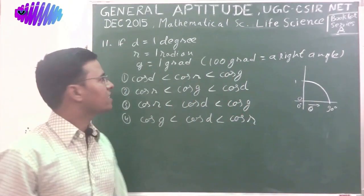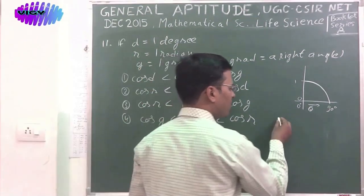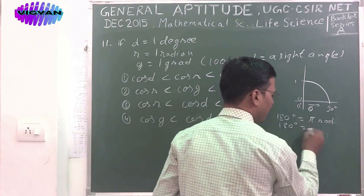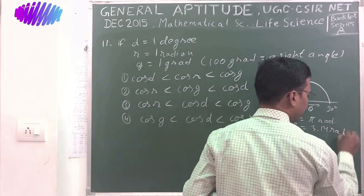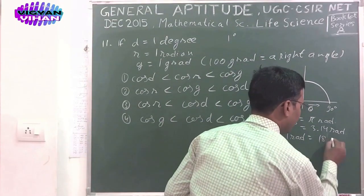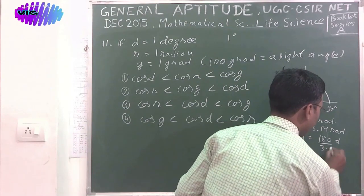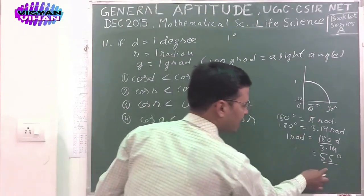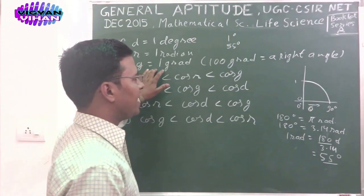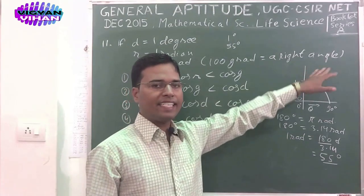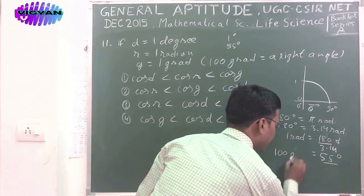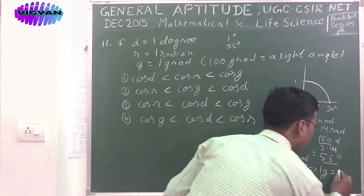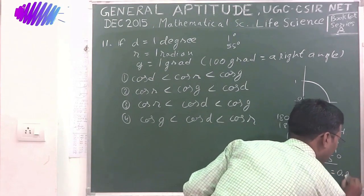Now compare those units. First, 1 degree and 1 radian: 180 degree is equal to pi radian, or 180 degree equals 3.14 radian. So 1 radian equals 180/3.14, which is nearly 57 degrees. For 1 gradient: 100 gradient equals a right angle, so 100 gradient equals 90 degrees. Therefore, 1 gradient equals 90/100, which is 0.9 degrees.